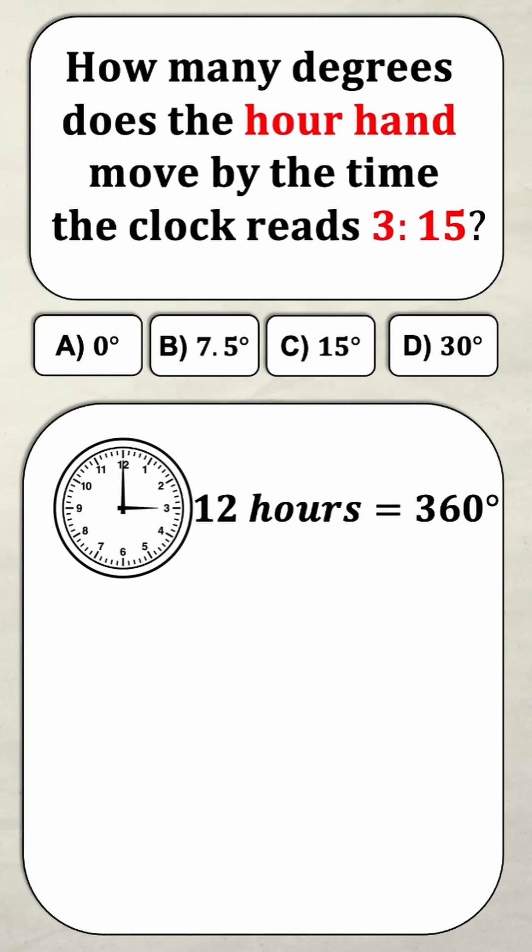So we start with this equation: 12 hours is 360 degrees, a full rotation of the clock. But we don't want 12 hours, so we need to simplify this a little bit.